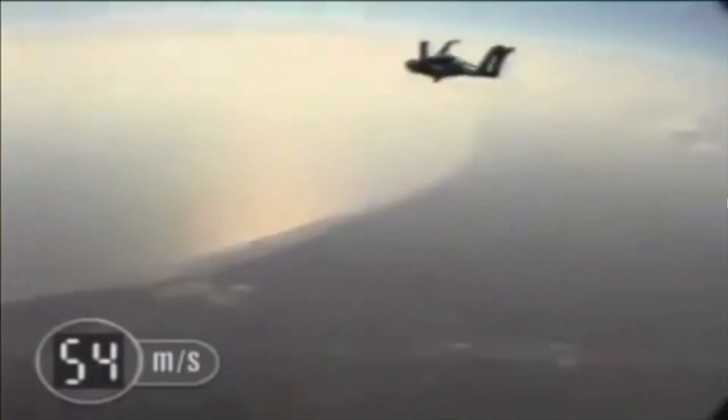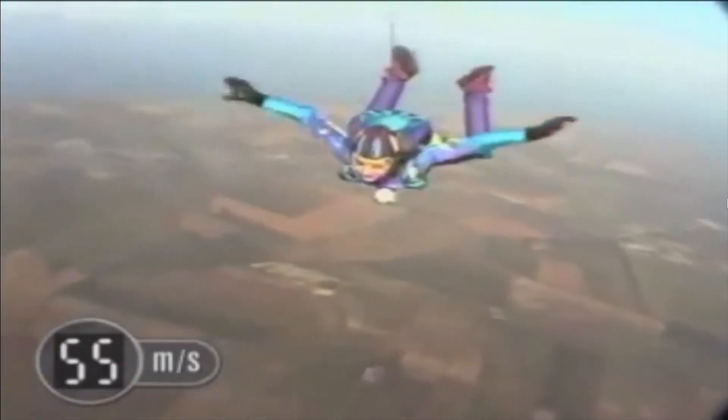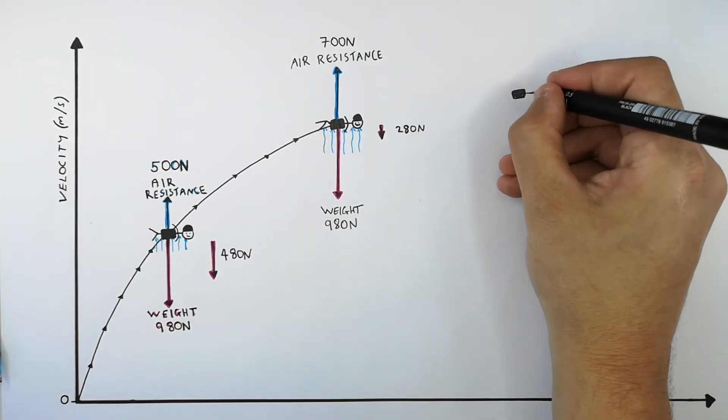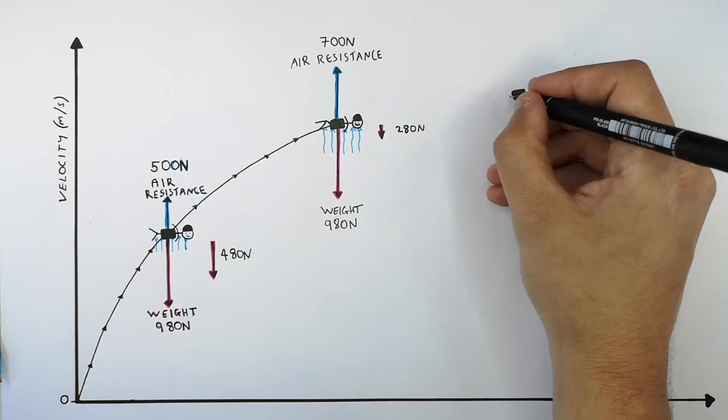Between 51 and 55 metres per second, the skydiver accelerates with a lower acceleration until reaching terminal velocity. The velocity does not increase beyond 55 metres per second — the skydiver is now moving at its terminal velocity of 55 metres per second and is no longer accelerating. But why is the skydiver no longer accelerating?